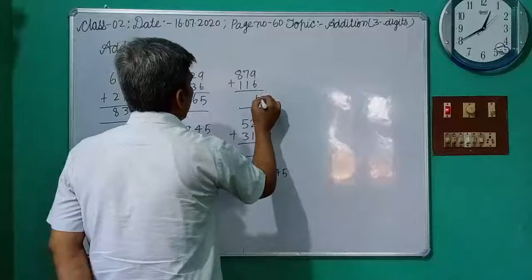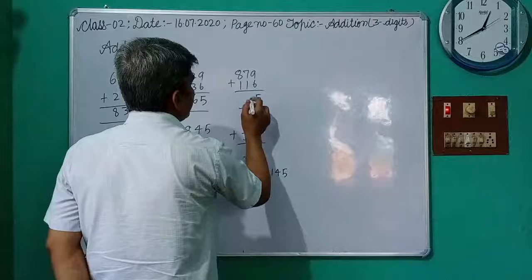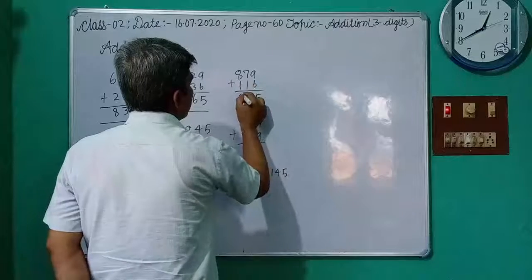Now next question: 379 plus 118. 9 plus 6 is 15. 5, 7 plus 1 is 8, 1 plus 9. 8 plus 1 is 9.